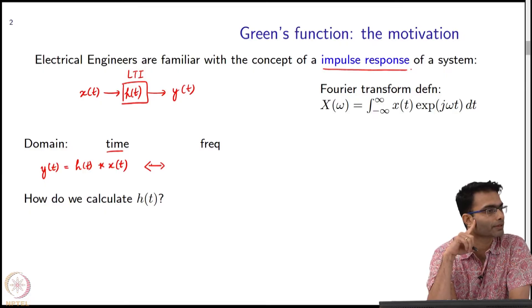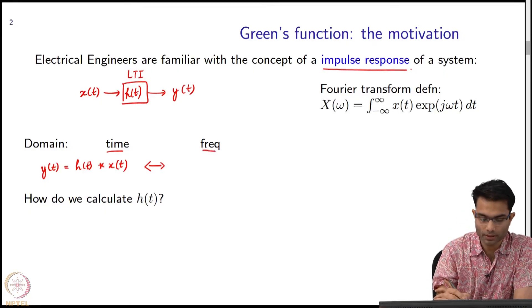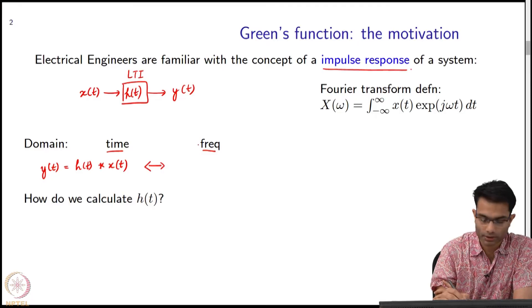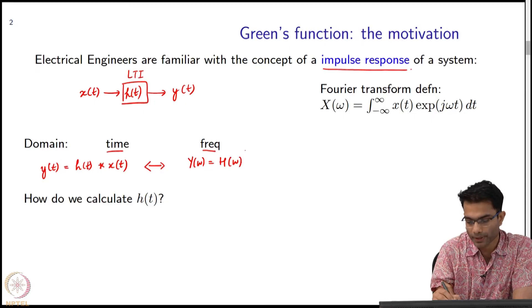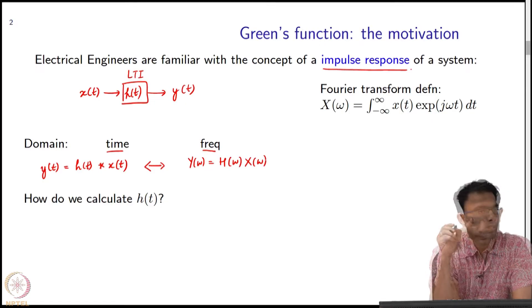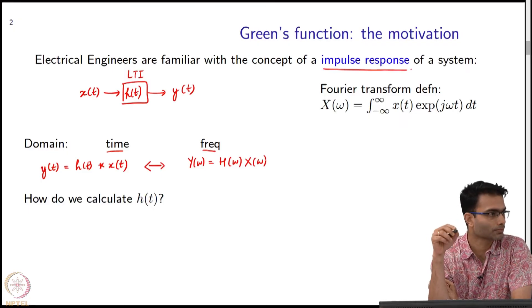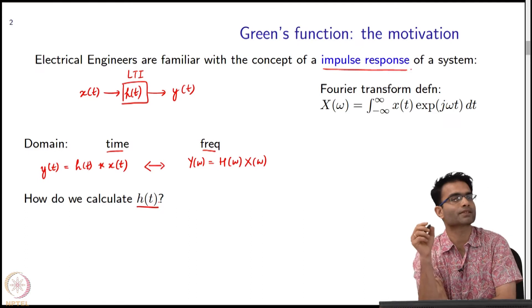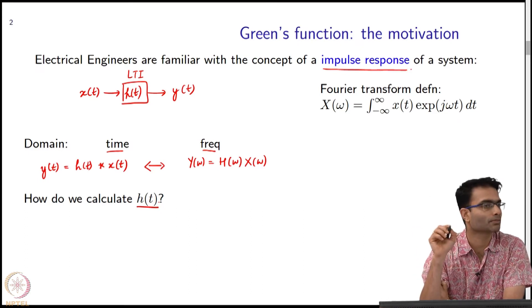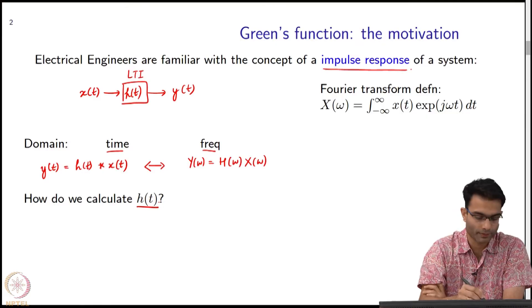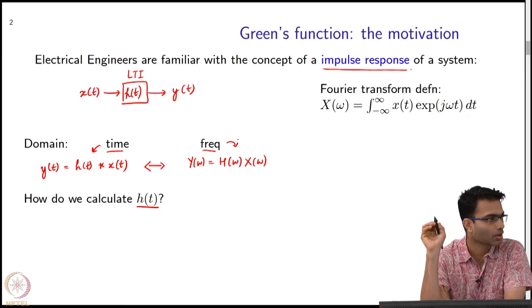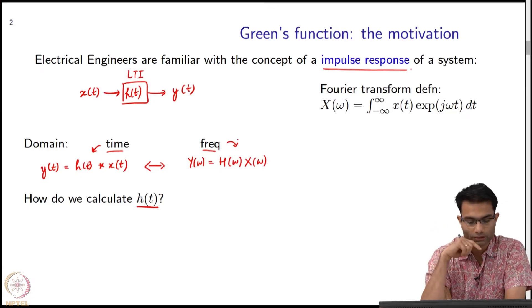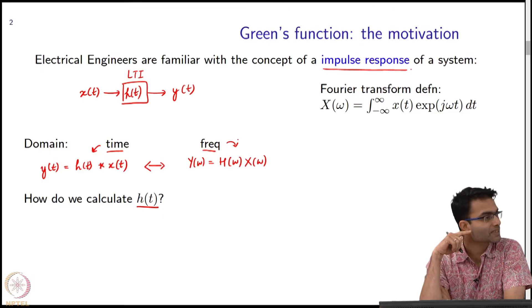All of you will know by now that working in the time domain with a convolution is a little bit more painful. The more convenient way to handle it is frequency domain. In the frequency domain, the convolution becomes a product, so this becomes y(ω) equals h(ω) times x(ω). Given any system, our first objective is to characterize the system, meaning let me find out h(t). Once I find h(t) for an LTI system, life becomes very easy because I either do the time domain version or the frequency domain version to get the response.